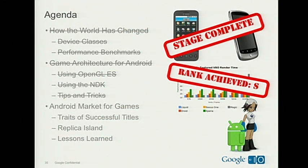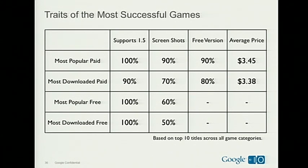Last section: Android Market for games. I didn't really know a lot about Android Market for video games — what makes a successful game in terms of user base. So I tried a bunch of stuff; Replica Island was the experiment. The entire point was to see: can I write this sort of game on Android, how do I write it, and how do I publish it? I looked at the traits of the most successful games on Android Market — the top ten titles across all game categories, sorted by most popular and most downloaded.